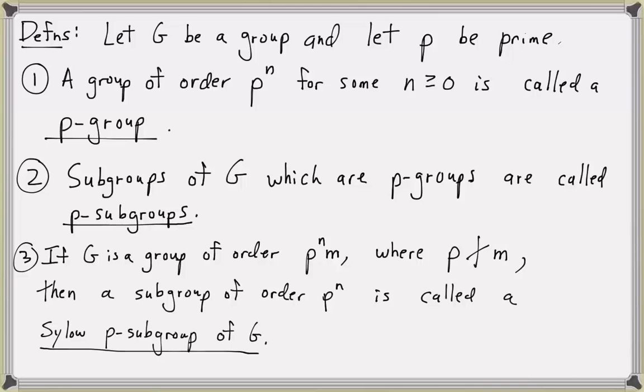Recall that we've already proved Sylow's first theorem. In terms of p-subgroups, given any group G and a prime power dividing the order of G, we know that p-subgroups exist. In particular, we know that Sylow p-subgroups exist for any prime p dividing the group order. So, Sylow's first theorem guarantees that p-subgroups and Sylow p-subgroups exist.